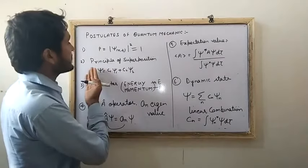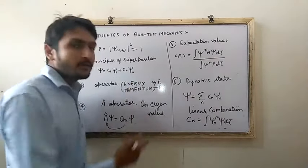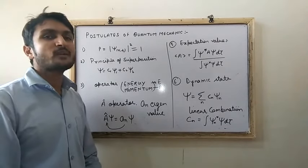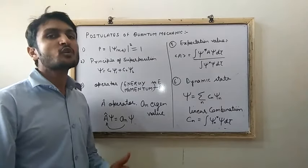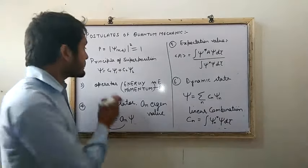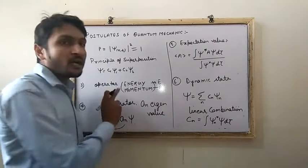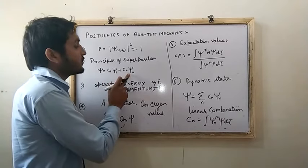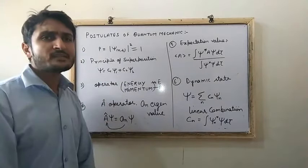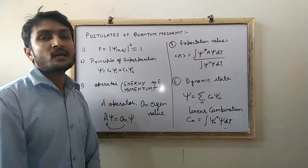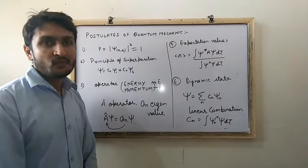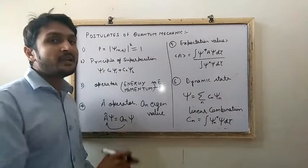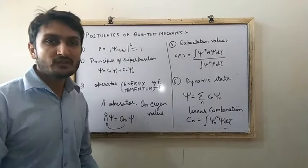The second postulate is based on the principle of superposition. ψ is the wave function and is based on the principle of superposition, meaning two or more wave functions can occur. This relation is valid for the wave function: ψ = c₁ψ₁ + c₂ψ₂, where c₁ and c₂ are the coefficients and ψ is the wave function of position and time. This is known as the principle of superposition.